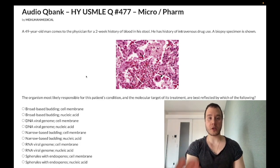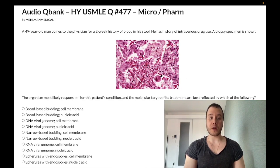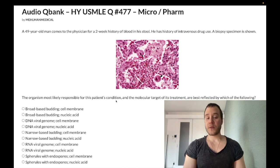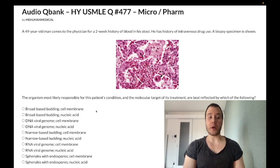Let's start: 29-year-old male with a two-week history of blood in his stool. He has a history of drug use. Our specimen is shown. The question, which is quite verbose, asks which organism is most likely responsible for this patient's condition and what the molecular target of its treatment is. Let's walk through the answer choices.